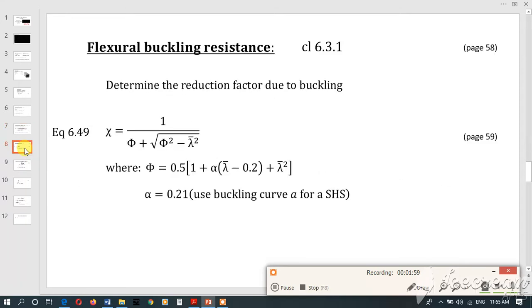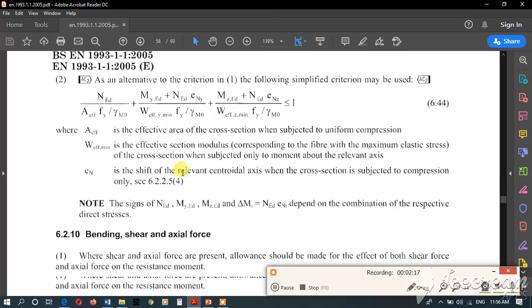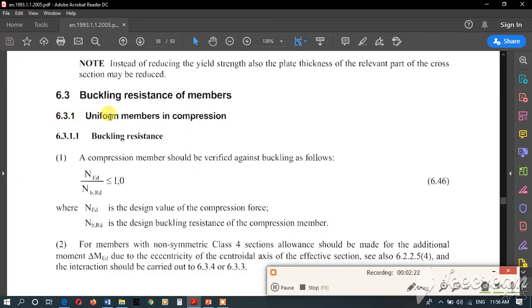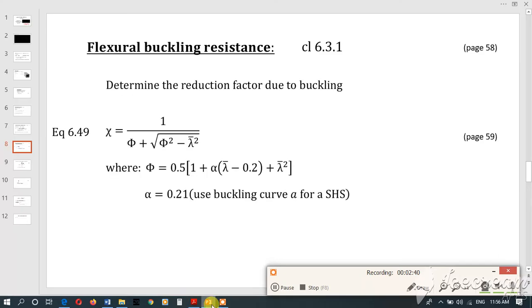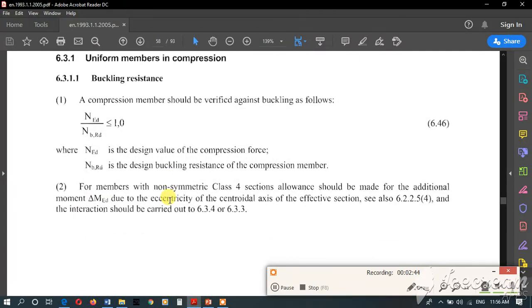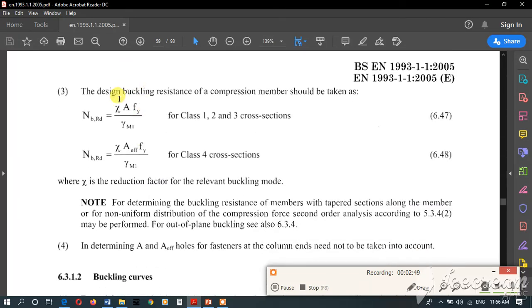The next step is buckling resistance. The equation for buckling resistance can be found on page 58, clause 631 for uniform compression. We need to satisfy this requirement where ned is the compression force and nbrd is the design buckling resistance of the compression member. The relationship for nbrd is given on the next page. There are two relationships, but we'll select this one because our cross section is class 1. So nbrd uses this equation.